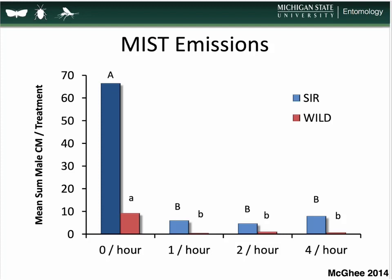One more experiment from Peter McGee's PhD thesis dealt with the number of emissions from aerosol emitters. Peter examined both trap captures of sterile and wild insects relative to the number of emissions per hour. Whether emitters sprayed once, twice, or four times per hour, there was no statistical difference in trap suppression for either sterile or wild insects. But as soon as the emitters were turned off, catches went up accordingly. It is therefore critical that aerosol emitters emit pheromone continuously throughout the season — turning them off, even between flights when traps appear empty, can result in problems.